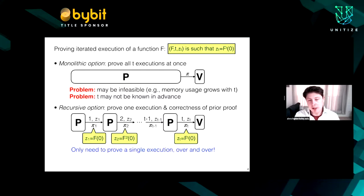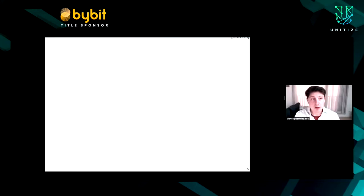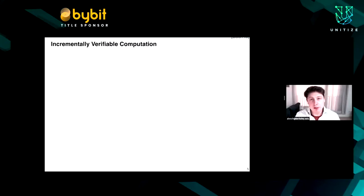Hopefully these pictures point to the difference between the monolithic and recursive options. What I would like to address now is: is this option secure? Is it efficient? To even start asking these questions, we need to discuss what is the goal of recursion — what do we obtain when we recurse? One way to do that is through a cryptographic primitive known as incrementally verifiable computation.